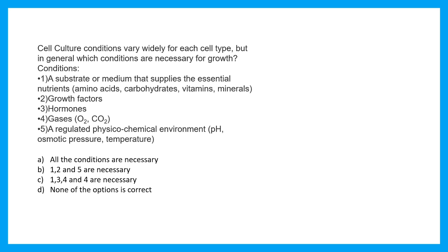We need to understand how many of these statements are correct. Option A says all the conditions are necessary, B says 1 to 5 are necessary, C says 1, 3, 4 are necessary, and D says none of the options are correct. So the correct option is all of these conditions are necessary. If you want to learn what is the basis and composition of cell culture media and what conditions are required, you can click on the i button right now.